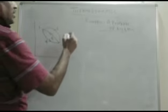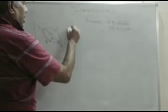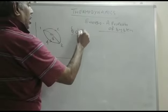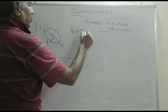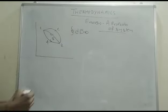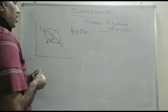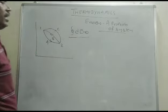We have to state that the cyclic integral of δE is equal to 0, and how to prove that the cyclic integral is equal to 0.